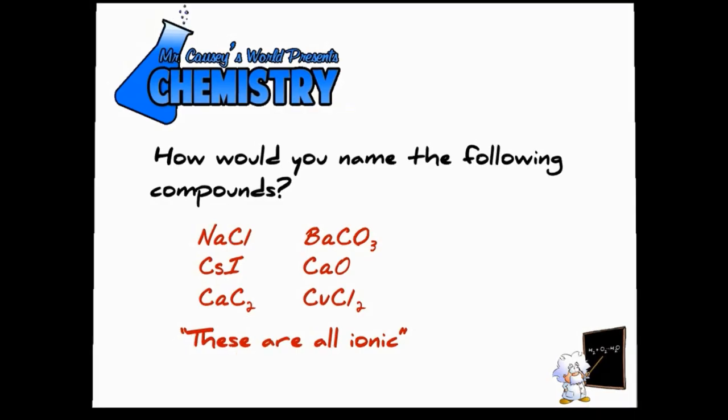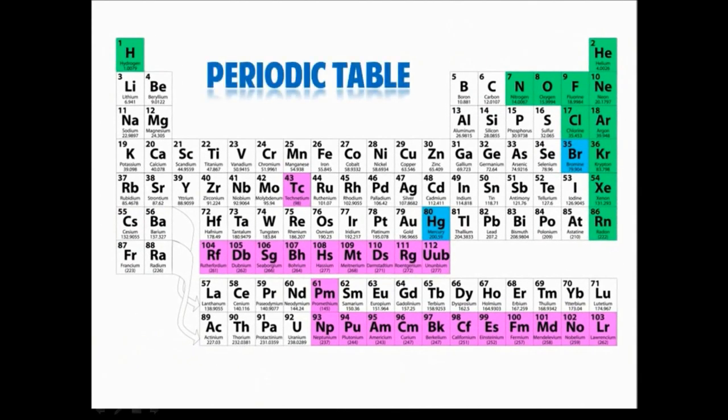So let's get out our periodic table and take a look at the periodic table here. If you look at boron, silicon, germanium, arsenic, antimony, tellurium, polonium, and astatine, these are the semi-metals or metalloids and they kind of separate the non-metals from the metals.